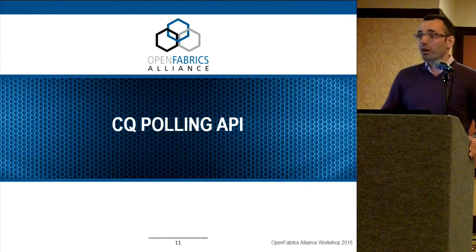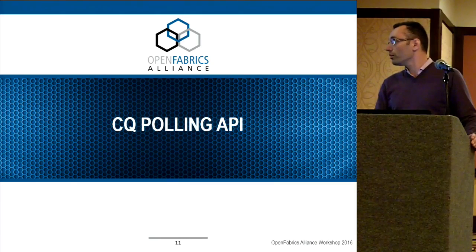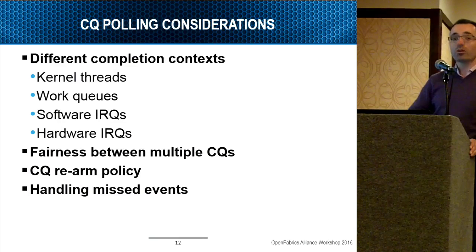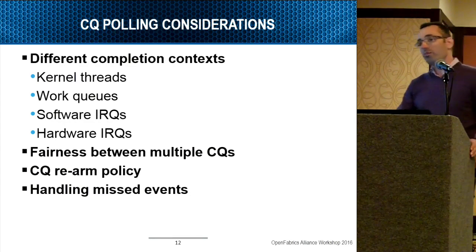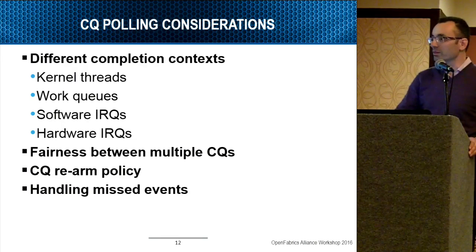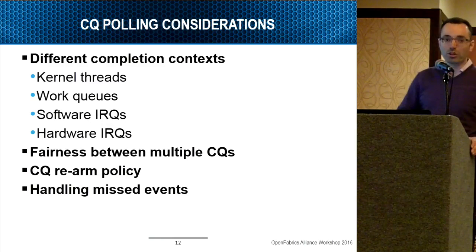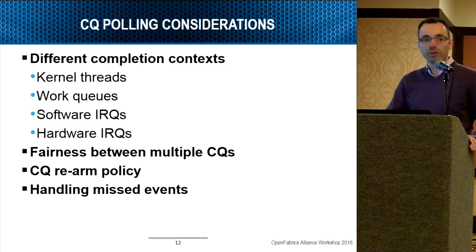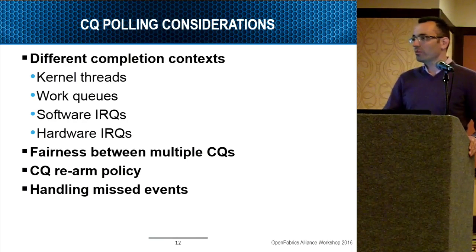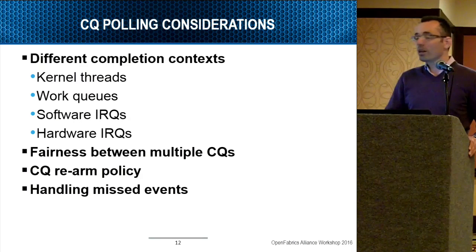The new additional API is CQ polling. Despite the fact that this is a very common operation in the IB stack, it is a very complex operation. We have a lot of considerations to take into account — for example, do we want to poll in kernel threads, in a work queue, in a hard IRQ context, in a soft IRQ context? Every option has drawbacks and can be chosen differently for different solutions. We also need to understand how to schedule between multiple CQs and what the rearm policy is. Missed events are almost unavoidable.